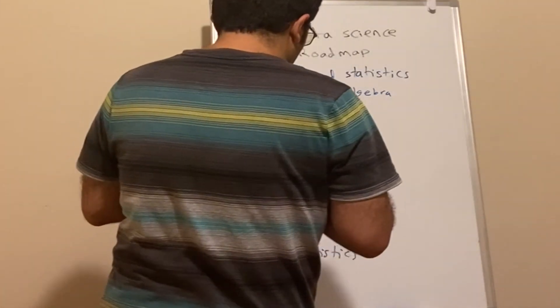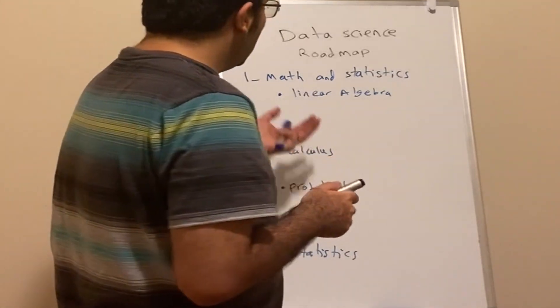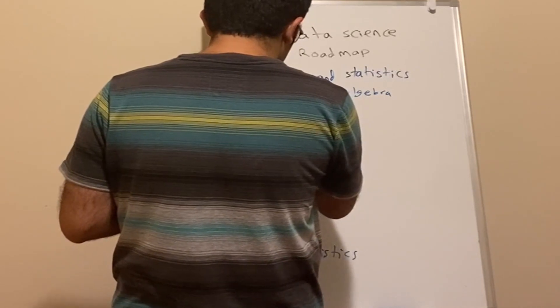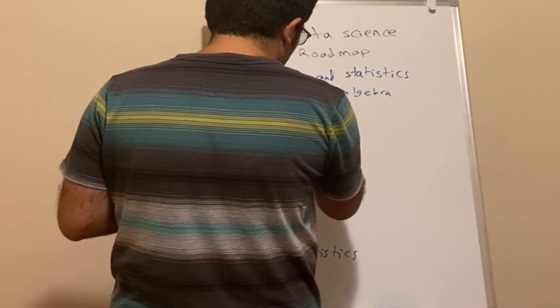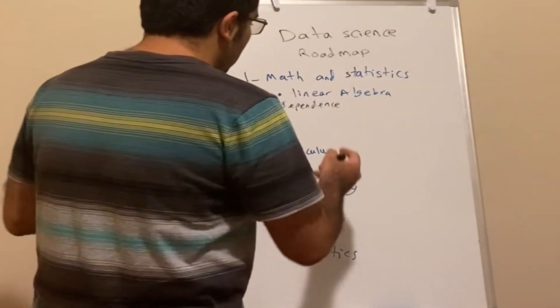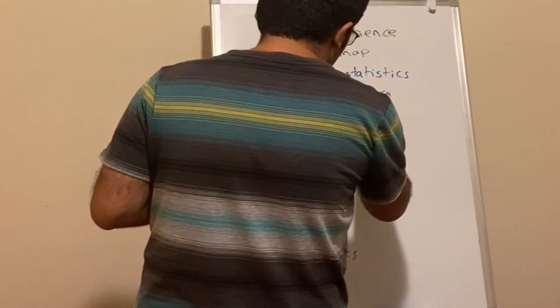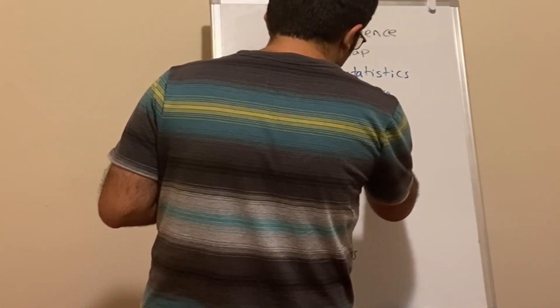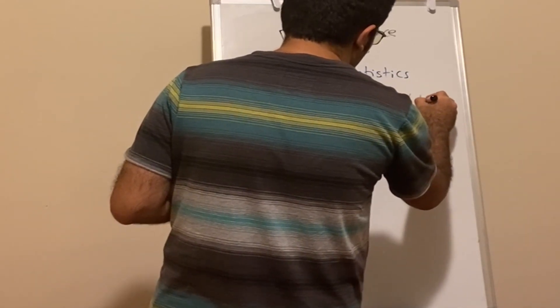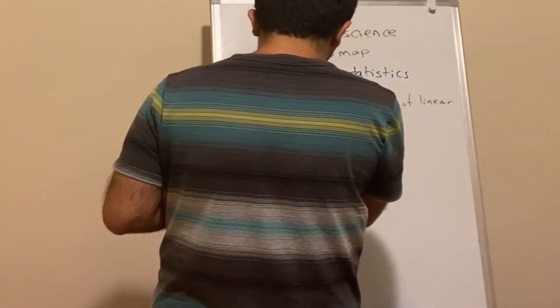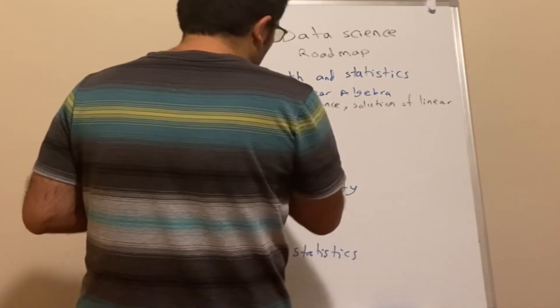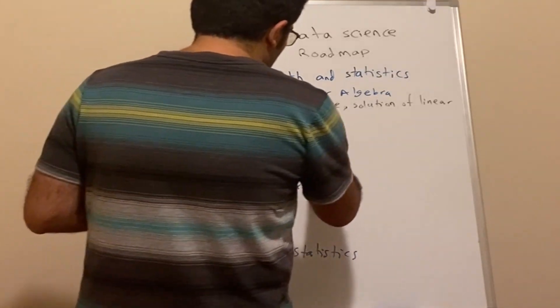Let's talk about what concepts we need to know. From linear algebra, we need to know independence - under what conditions vectors are going to be independent. We need to know linear equations and solving linear equations.